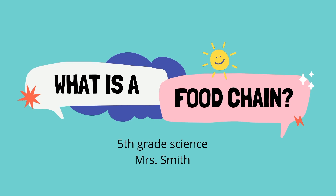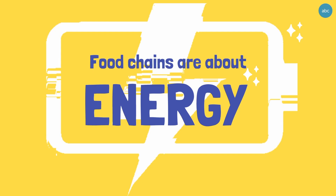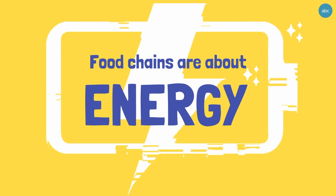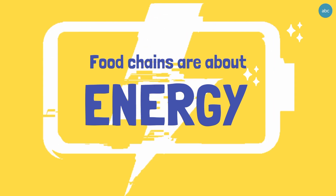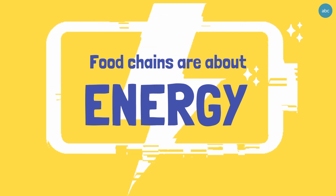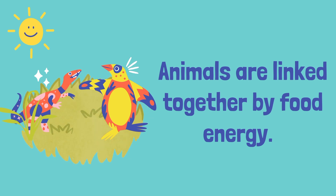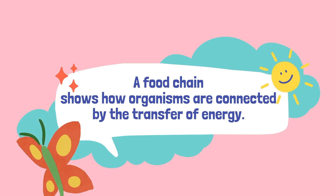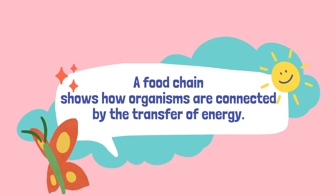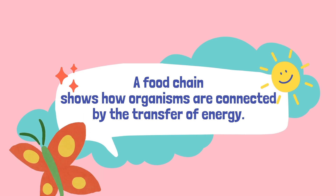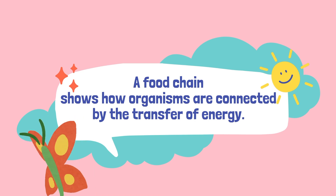What is a food chain? Food chains are about energy and the transfer of energy. Animals are linked together by food energy. A food chain shows us how these organisms or animals are linked together or connected by the transfer of food energy.